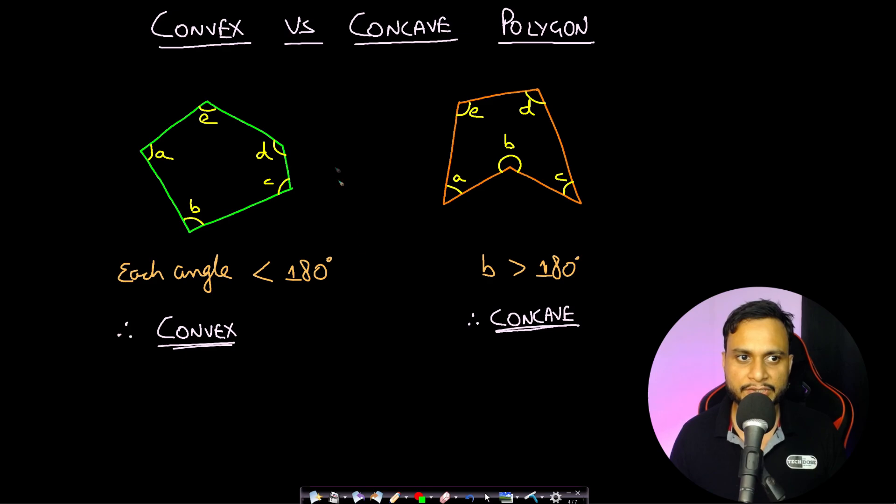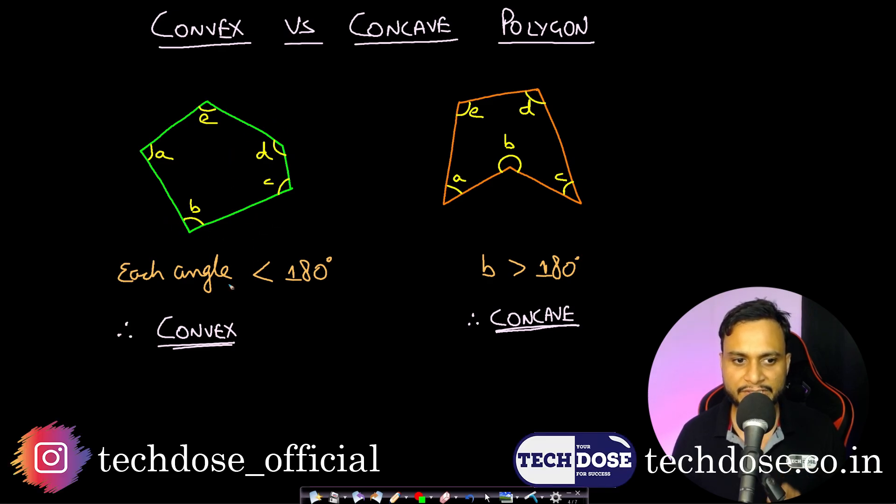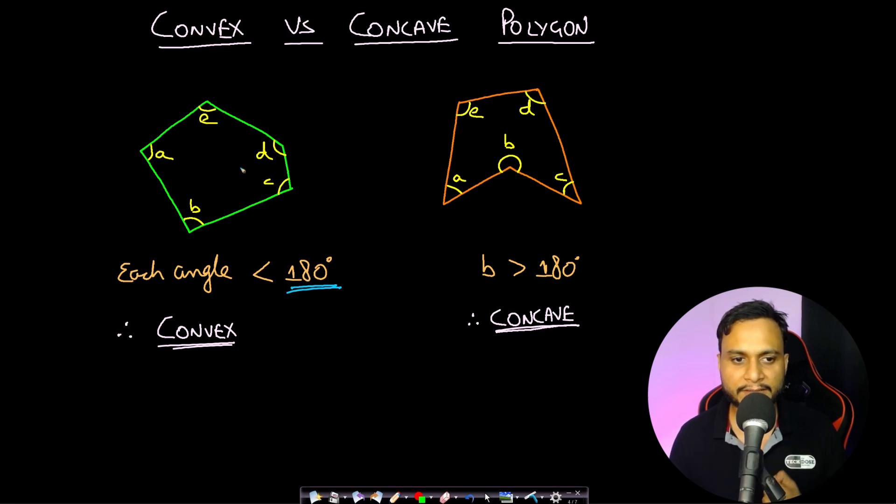The next classification is the convex polygon versus concave polygon. So if you have a polygon structure where each angle is less than 180 degrees, that is there is no angle which is greater than 180 degrees, then that polygon is said to be a convex polygon. But if you have a polygon structure where you have at least one reflex angle, that is you have at least one angle which is greater than 180 degrees, then that polygon will be said to be a concave polygon.